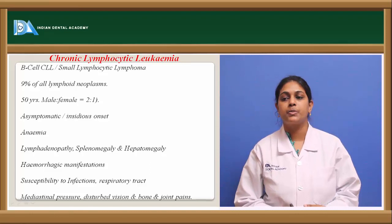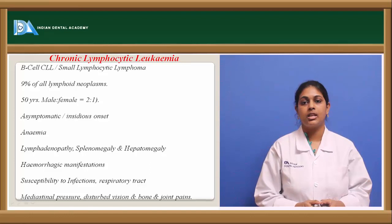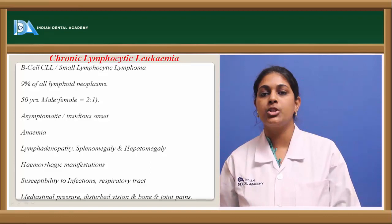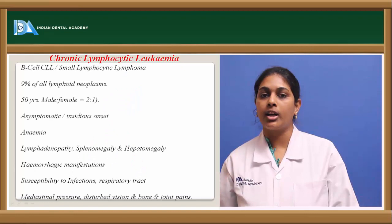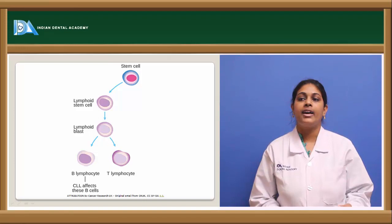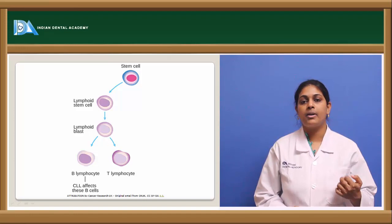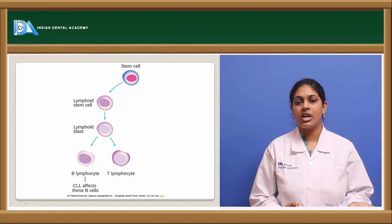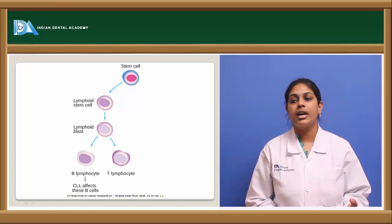Due to reduced leukocyte numbers in CLL, patients are more susceptible to infections, particularly respiratory tract infections. Other findings include mediastinal pressure, disturbed vision, and bone and joint pains. CLL occurs when B lymphocytes formed from stem cells via the lymphoid stem cell → lymphoid blast → B lymphocyte pathway undergo malignant transformation, resulting in chronic lymphocytic leukemia affecting B cells.